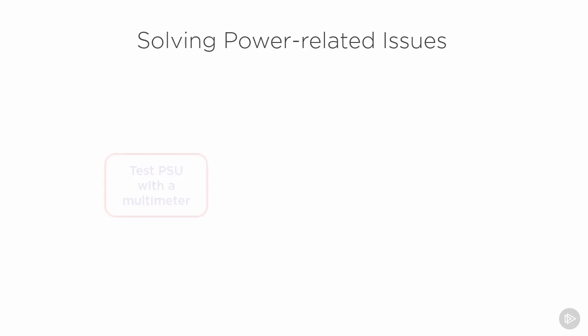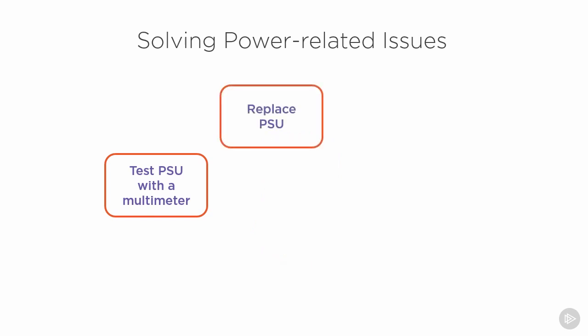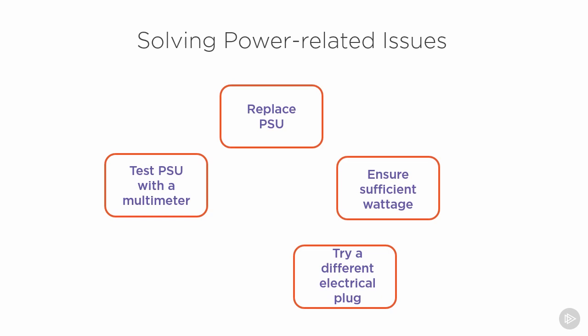How do we solve some of these issues? One thing to consider is having a multimeter on hand. A multimeter allows you to test electrical components, including power supply units, to make sure the correct power is being delivered through all the connectors. If there's a burning smell or smoke coming from the PSU, it needs to be replaced. We need to make sure we have sufficient wattage for all the components inside the machine. Try plugging the device into a different electrical outlet if you suspect the problem is with the power from the wall, or try the PSU in a different unit. Sometimes you need to swap out individual components to find the fault — and remember, only change one thing at a time.